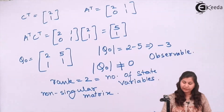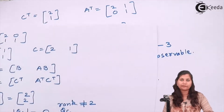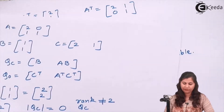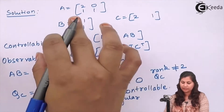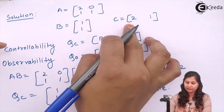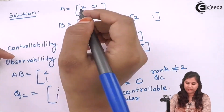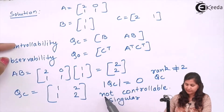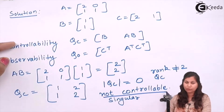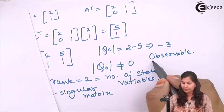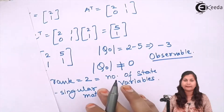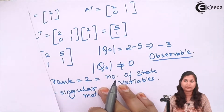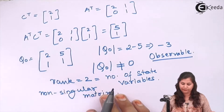So for the first part, for the first system given to us with the values of A, B, C — the system is not controllable, but it is an observable system.